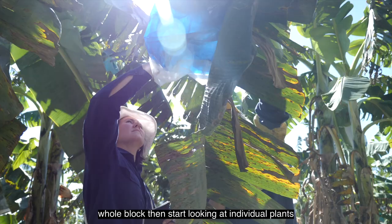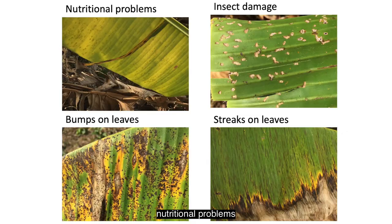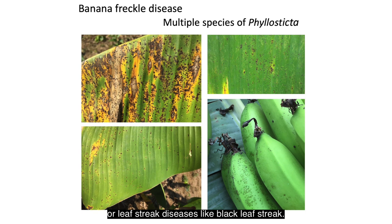Once you have an overview of the whole block, start looking at individual plants and then leaves. Obvious problems could be nutritional problems, insect damage, or leaf diseases like banana freckle, or leaf streak diseases like black leaf streak.